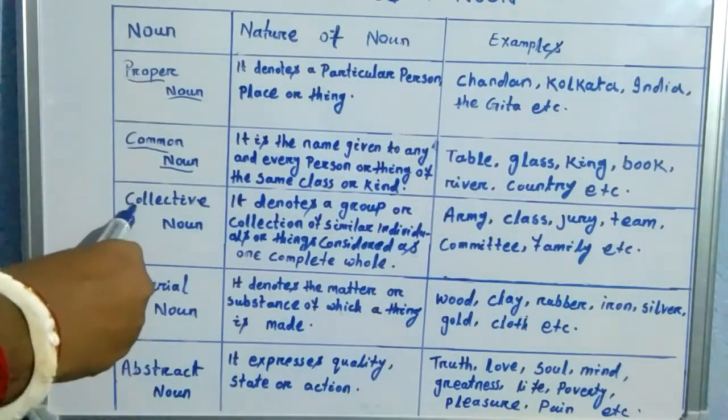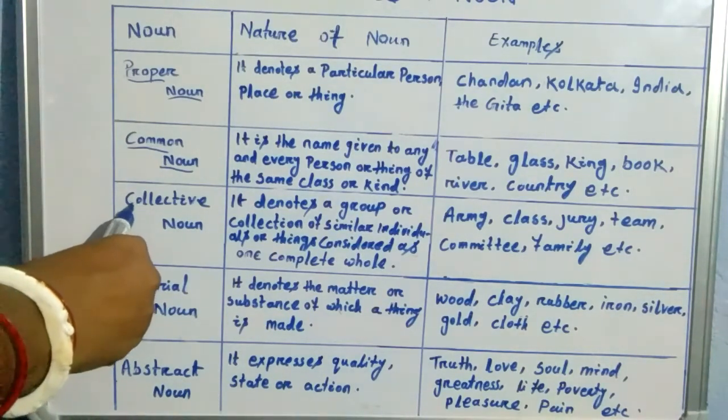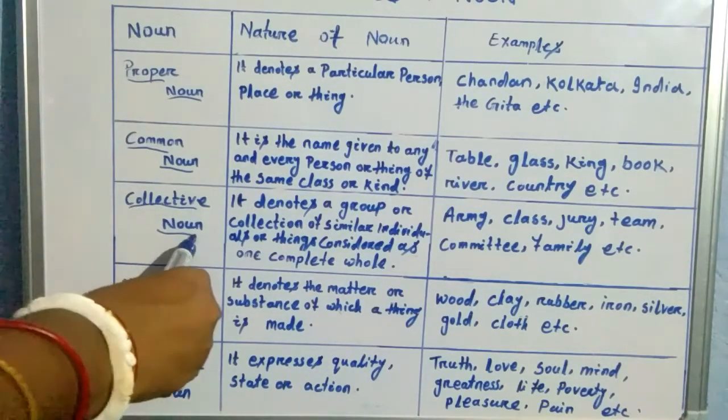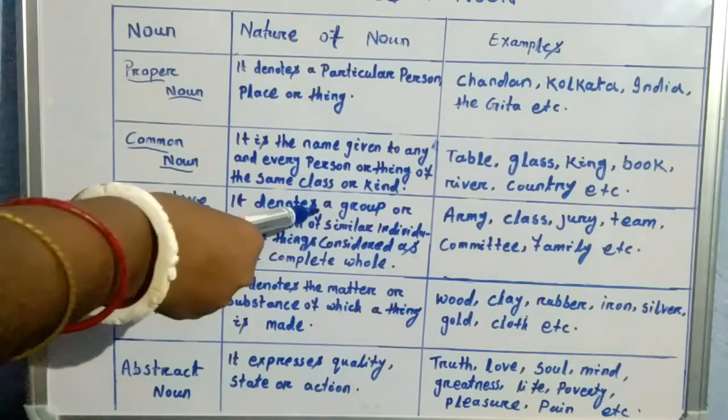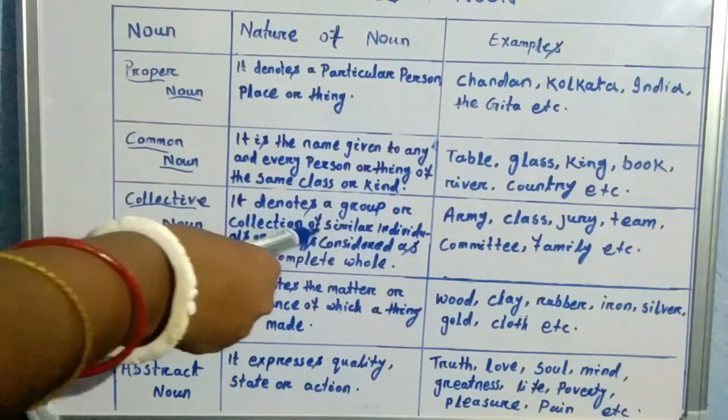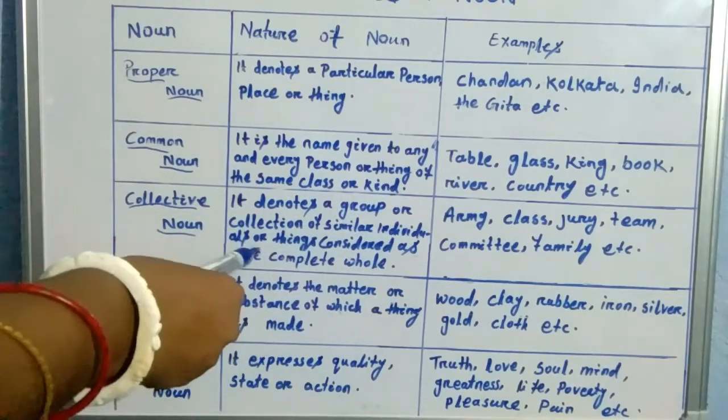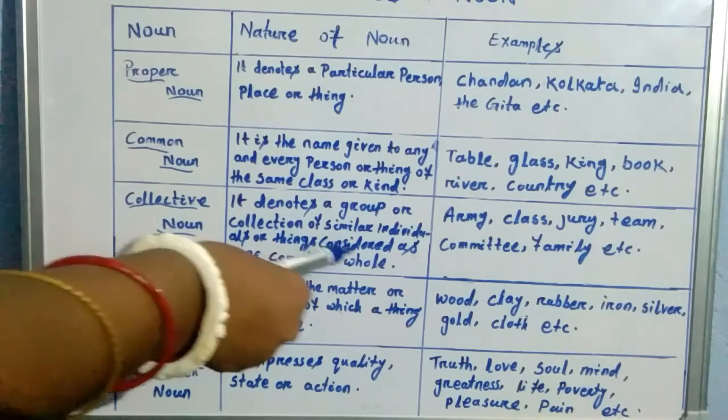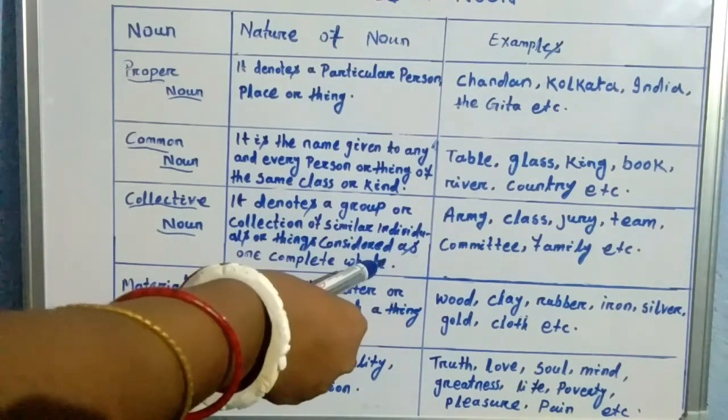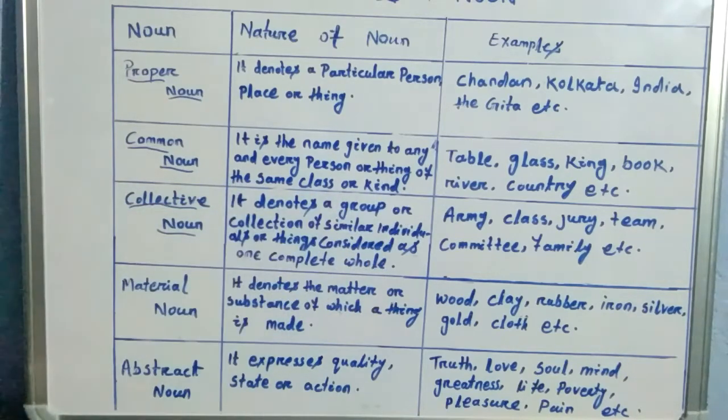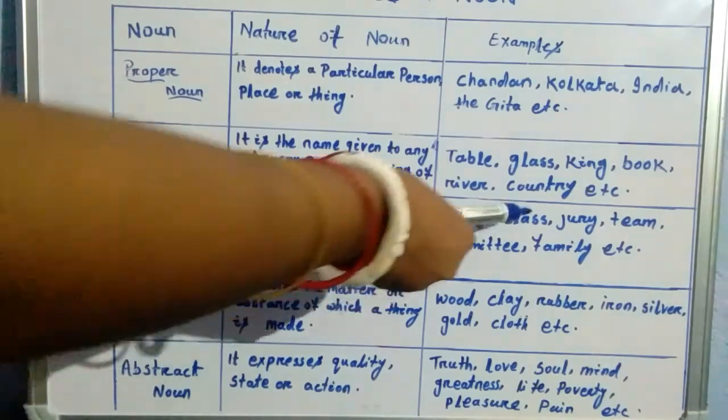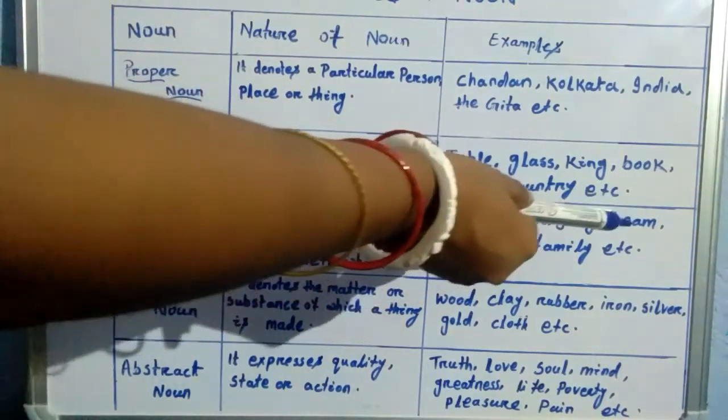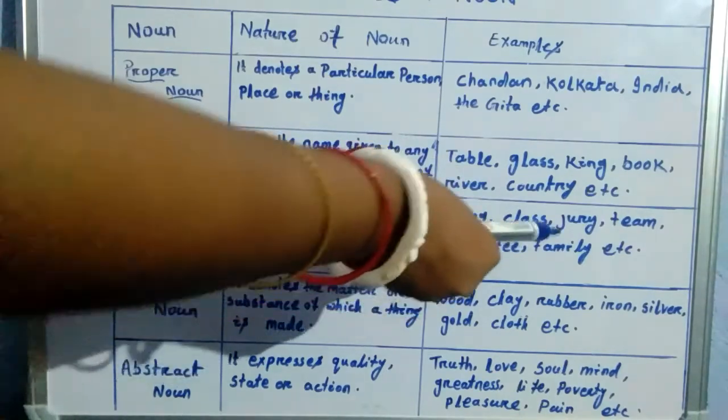Then the next kind of noun is Collective noun. And it denotes a group or collection of similar individuals or things considered as one complete whole. And the examples are Army, Class, Jury, Team, Committee, Family, etc.